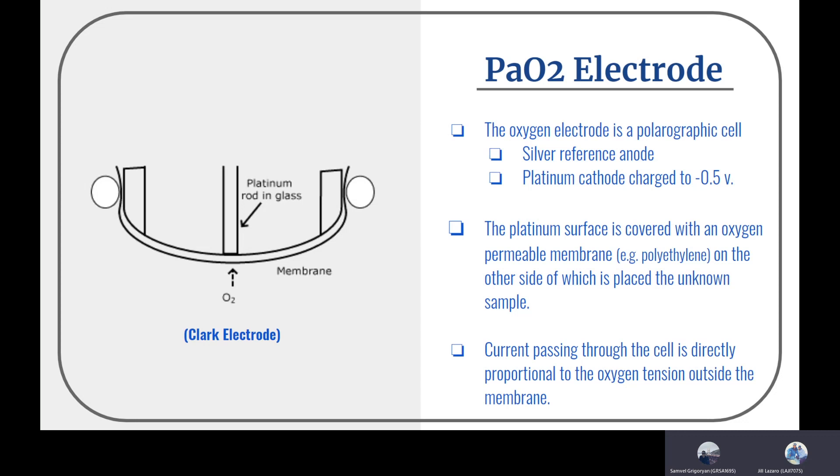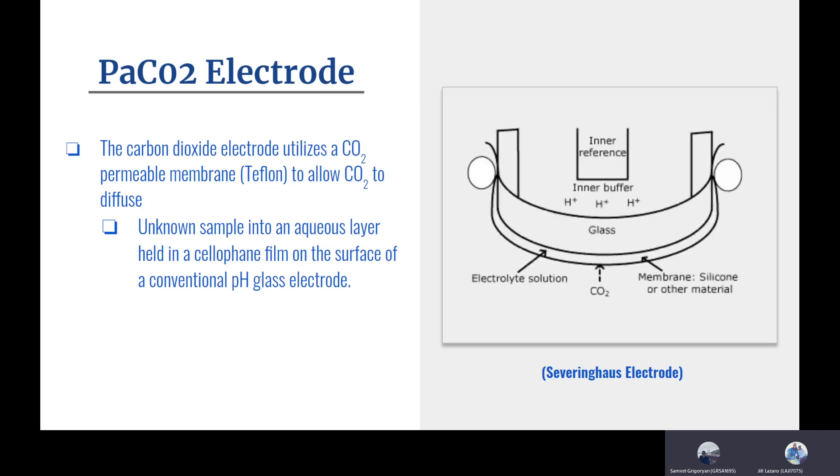The third one is the PaCO2 electrode, the carbon dioxide sensor. The carbon dioxide sensor uses a CO2 permeable membrane, known as Teflon, to allow carbon dioxide to diffuse through. As you can see in the picture, the sample passes through the liquid layer on the Teflon, and the sensor measures how much CO2 is able to get through the membrane. This is known as the Severinghaus electrode.